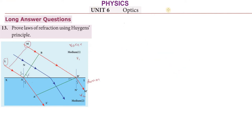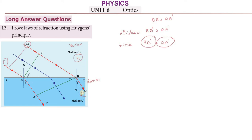BB' equals AA' — but they are not the same distance. BB' distance is greater than AA'. This is because velocity V1 is greater than velocity V2. We know that in a vacuum light travels fastest. If V1 is greater than V2, the distance traveled in the same time will be greater in medium 1 than in medium 2.